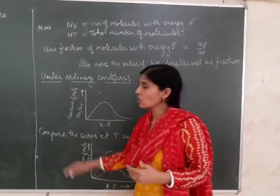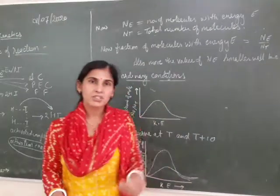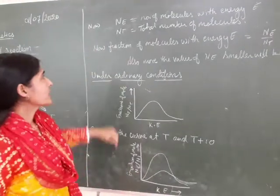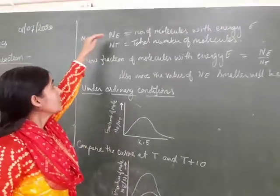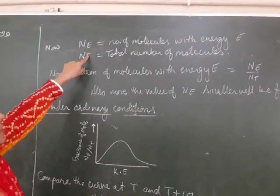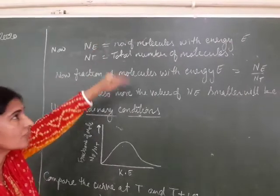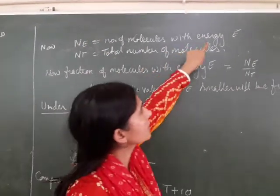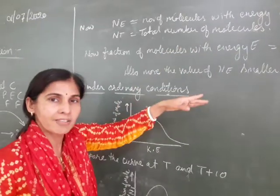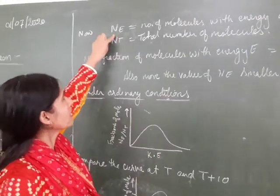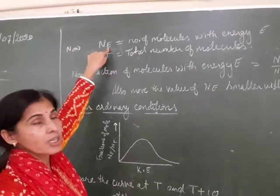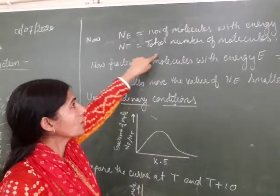Now we are extending the concept of activation energy and temperature dependence of reactions. Say for example we have NT, the total number of molecules, and out of them NE is the number of molecules with energy E. Or we can say if we term this energy as activation energy, then NE is the number of molecules having activation energy, and NT is the total number of molecules.